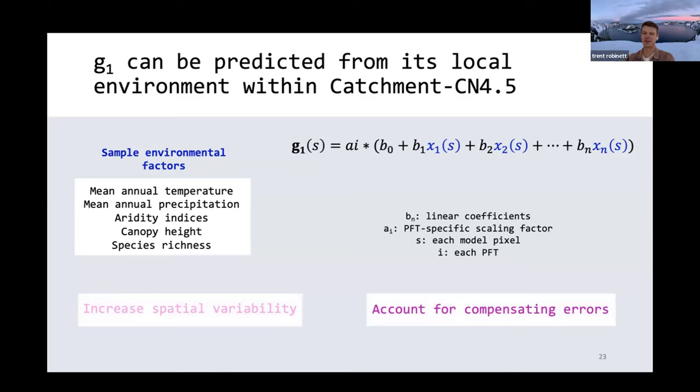If we remember back to the two goals that we said this parameterization scheme needed, that is increasing spatial variability and accounting for compensating errors, this method can achieve both. Because these x(s), these environmental predictors, will hold the spatial variability that we are looking for in our new parameterization scheme. And then we can tune our coefficients online in the model itself to be able to account for these compensating errors.